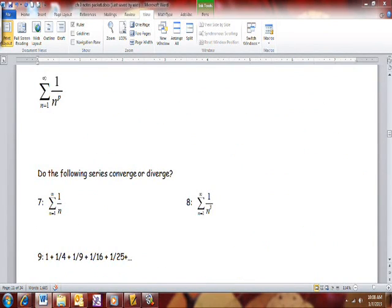P-series are probably the most fun ones to use. And you basically have one rule. If you have a series that looks like so, and the value of p, which is the exponent, always has to be the exponent, is greater than 1, then it converges. And if p is less than or equal to 1, it diverges.